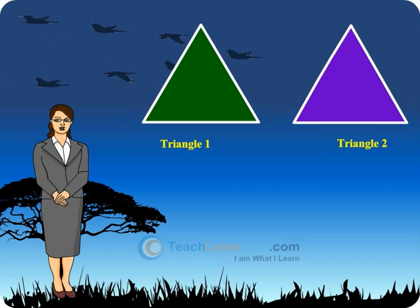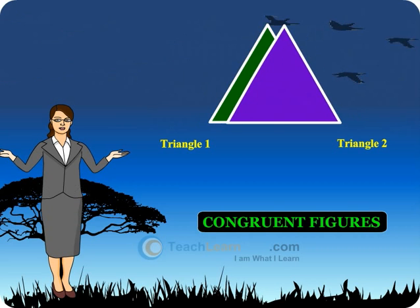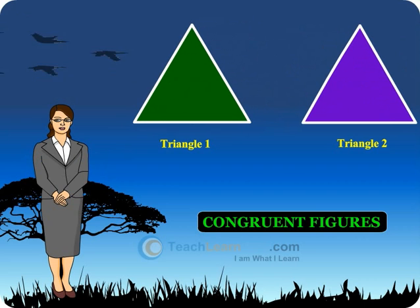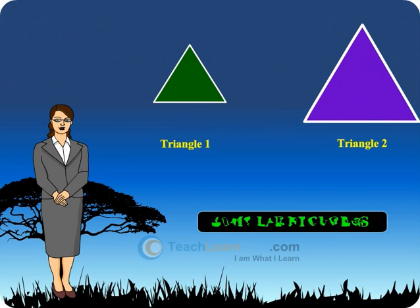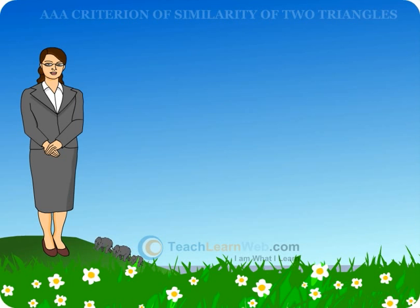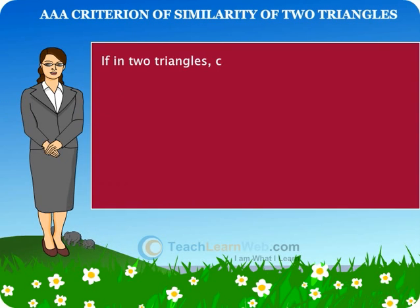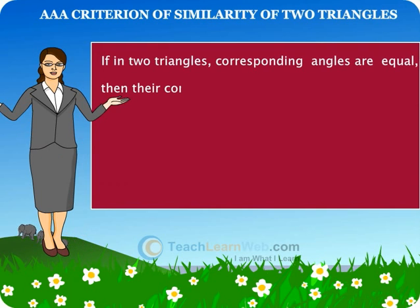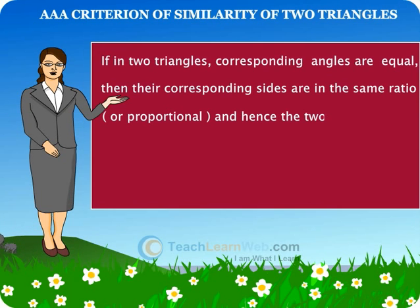Two figures are said to be congruent if they have the same shape and same size. In this session, we shall study figures that have the same shape but not the same size, which are called similar figures. In particular, we shall discuss the similarity of triangles and apply Pythagoras theorem. If in two triangles corresponding angles are equal, then the corresponding sides are in the same ratio or proportion, and hence the two triangles are similar.